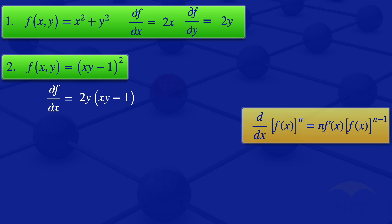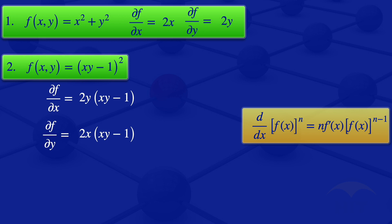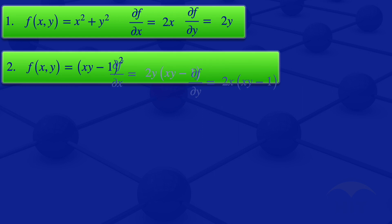Moving on to the partial derivative of f with respect to y, we now treat x as if it's a constant. Using the same chain rule formula with n = 2, we differentiate (xy − 1) with respect to y, treating x as constant, which gives x. Multiplying x by 2 gives 2x, so the partial derivative of f with respect to y is 2x(xy − 1).